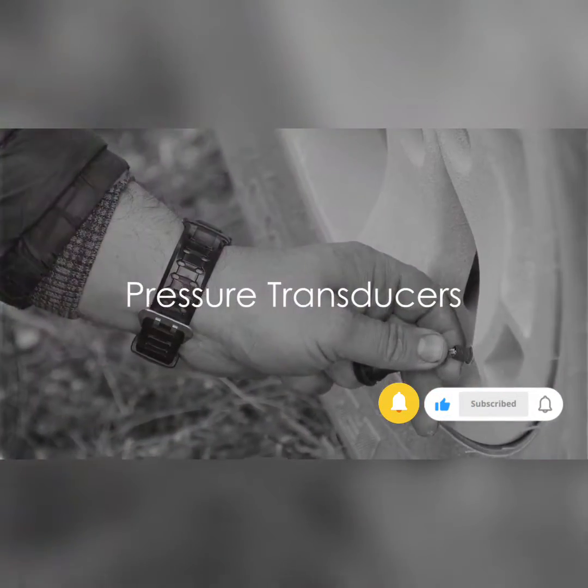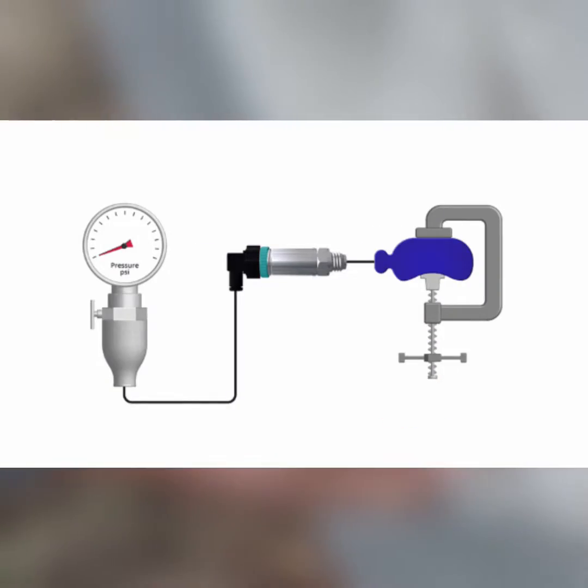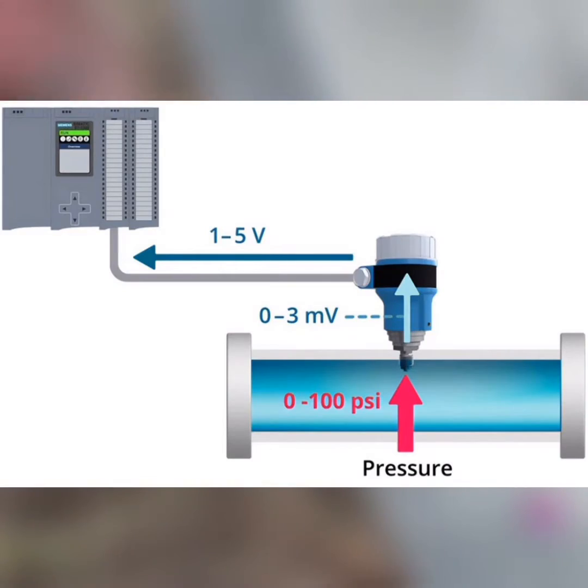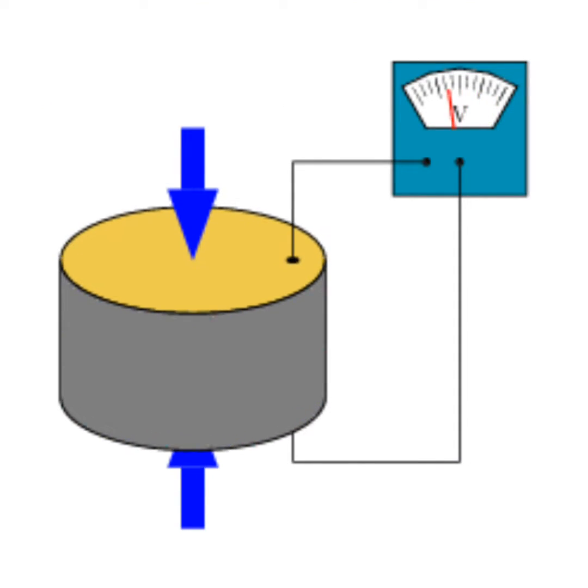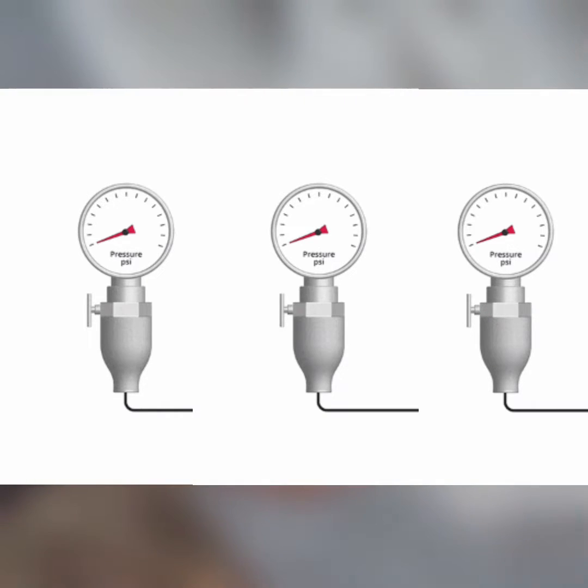Then, we have pressure transducers, also known as pressure sensors or pressure transmitters. These devices change pressure into an electrical signal. They typically use strain gauges or piezoelectric elements to measure pressure and relay the data to a control system or display.